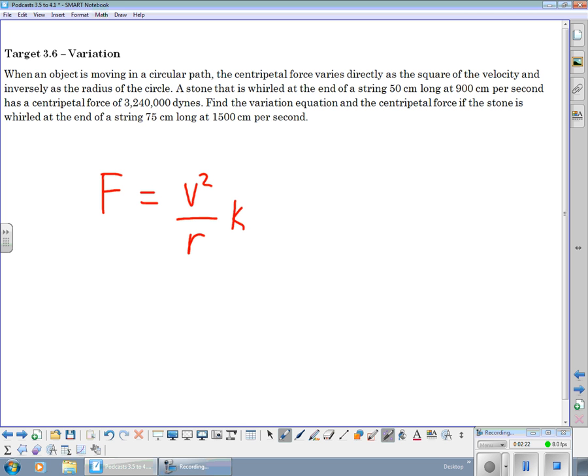So a stone that is whirled at the end of the strings. If you're not sure about it, draw it out. We've got a person here, and they're spinning this stone around, so this has a radius of 50. Now again, if you're not sure which one's which, centimeters per second is a velocity. Centimeters is a distance.